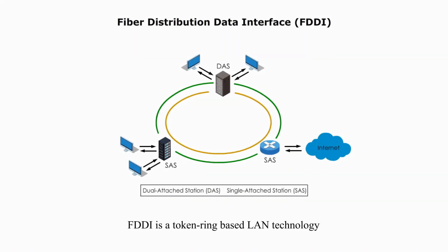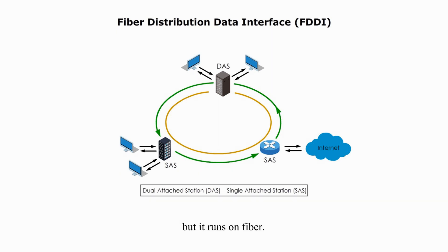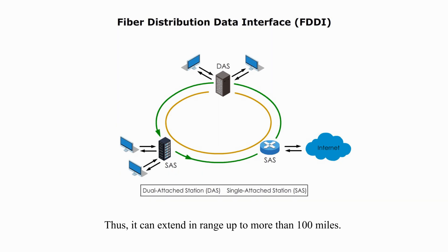FDDI is a token ring-based LAN technology developed in the 1980s. It is similar to the IEEE 802.5 token ring, but it runs on fiber. Thus, it can extend in range up to more than 100 miles.